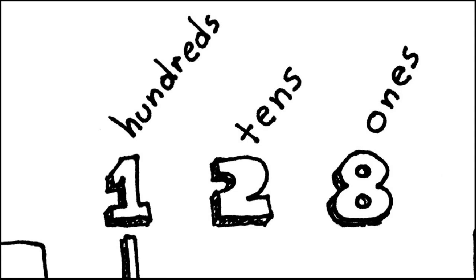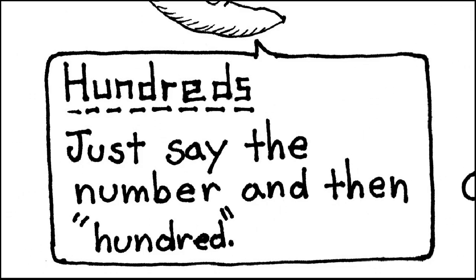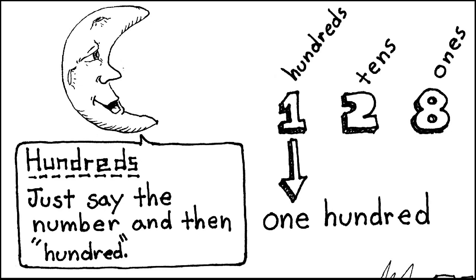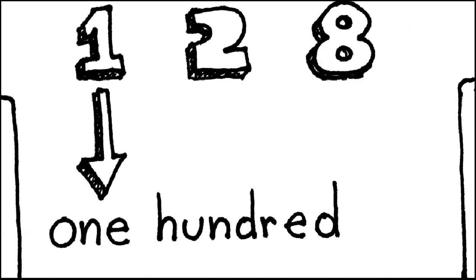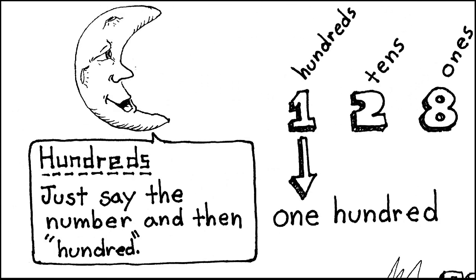When we see a digit in the hundreds place, we just say the number and then hundred. For example, we see a one, so we say one and then hundred — one hundred. That's it. You just say the number and the word hundred.